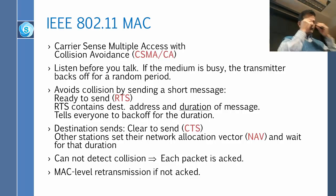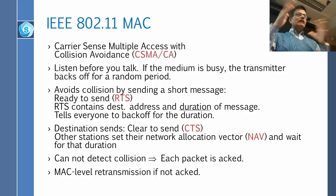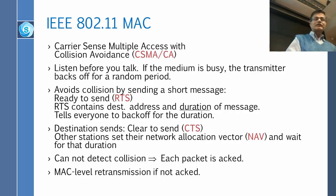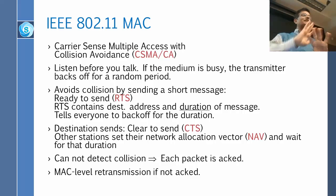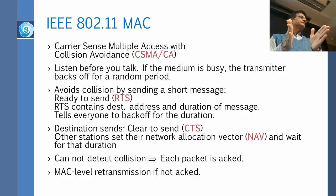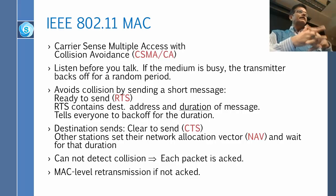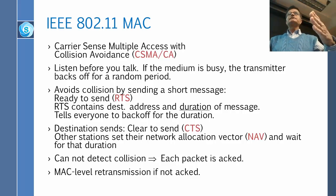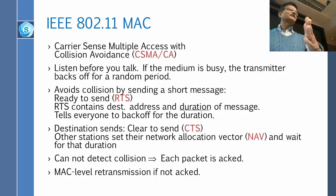If two nodes both don't get a CTS, they will both draw a random number. This is not like frequency hopping in CDMA where you change frequency using a random number generator. Here, we are just drawing a random number to decide how long to wait. This is the same thing done in Ethernet — if you collide, you draw a random number and back off. Back off means you wait for a period of time; you don't change your frequency or anything.